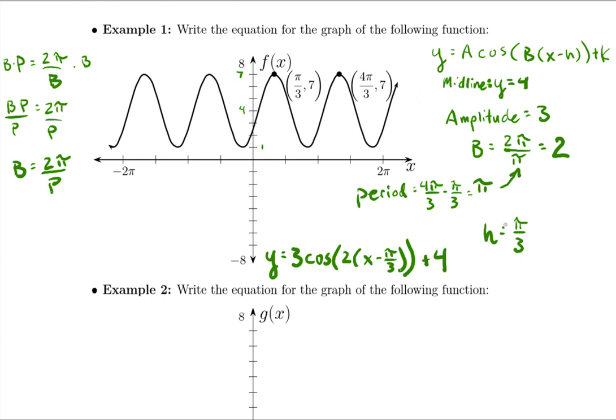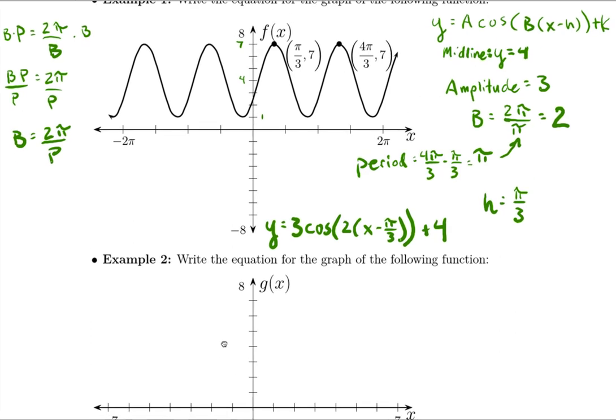And remember, since pi over three is my true shift, I've got to have it in parentheses with the two on the outside, right? Remember, the argument needs to be factored in order to be able to see what the true shift is.